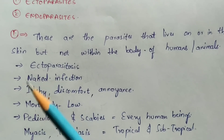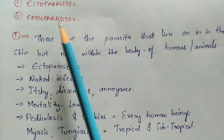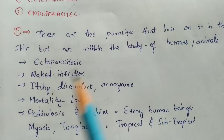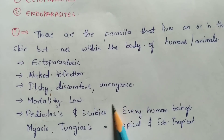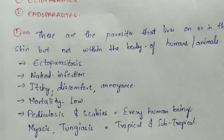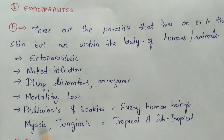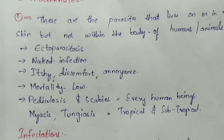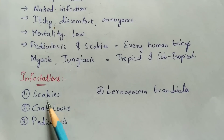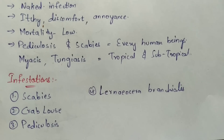The mortality rate from ectoparasites is very low, whereas the mortality rate from endoparasites is very high. Diseases caused by ectoparasites include pediculosis and scabies — which can be seen in nearly every human being at least once in their life — as well as myiasis and tungiasis, seen in tropical and subtropical regions. Other notable diseases include crab louse and Lernaea branchialis.